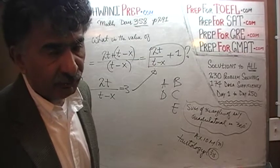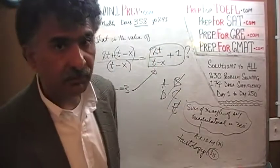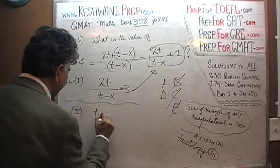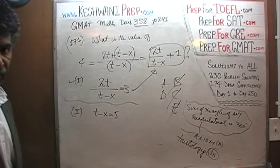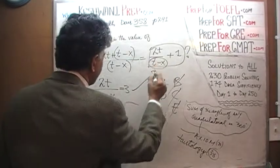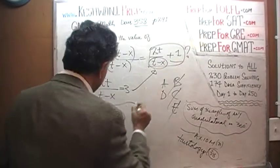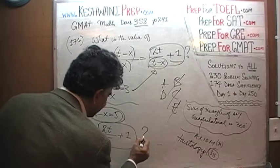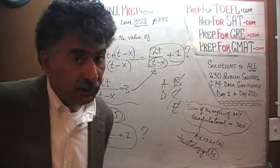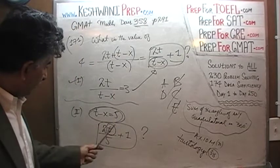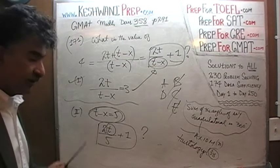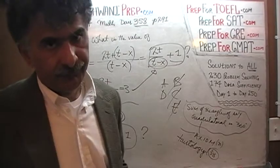Now that we have established that the first statement by itself is enough, the answer cannot be B, C, or E — it has to be either A or D. In the second statement, they tell us that t − x equals 5. If we substitute that in, we get 2t/5 + 1. But we do not know what t is. There is no way to figure out the value of t from the second statement alone. Until we know t, we cannot figure out what 2t/5 is. The second statement does not do the job.